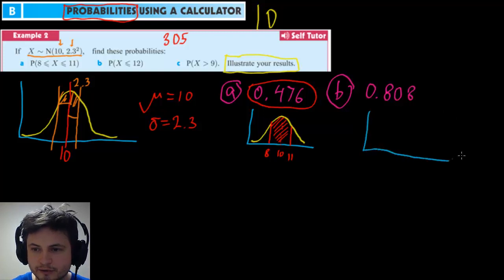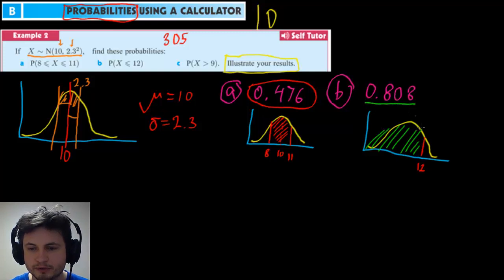So we have something that looks like this. The value 12 is going to be somewhere right here and essentially everything right to this left side is what we're looking for and the chance here is it's 80.8 percent of having one of these values and lastly question C.